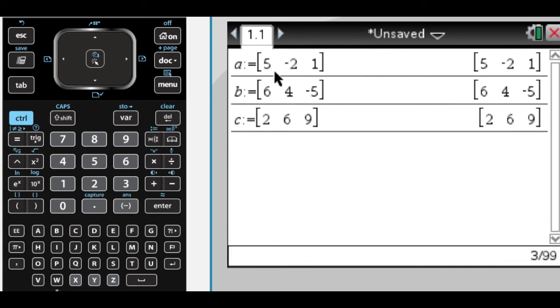So I have the point A, which is (5, -2, 1), the point B, which is (6, 4, -5), and C, which is (2, 6, 9), and I'm going to use those to create the vectors that I want.